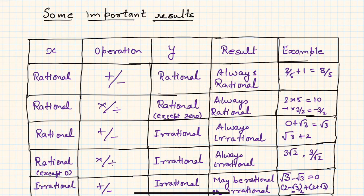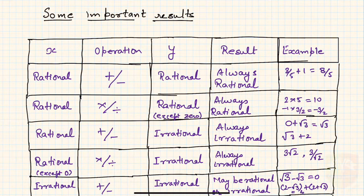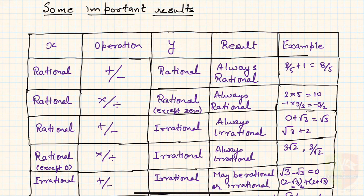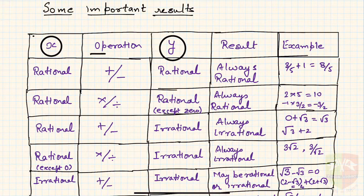Hi folks, welcome to this session on number systems. Continuing with our sessions on rational and irrational numbers, I have come up with a table which explains some of the important results of rational and irrational number operations. I have made a table where x and y are numbers, and we are doing some operation on x and y.